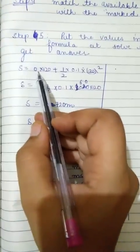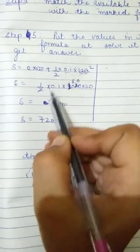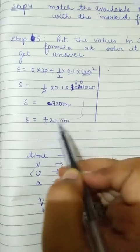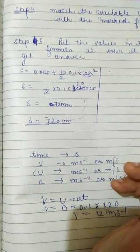Now, put the values 0 into 120 plus half a t square. Calculate it and we get the answer s is equal to 720 meter.